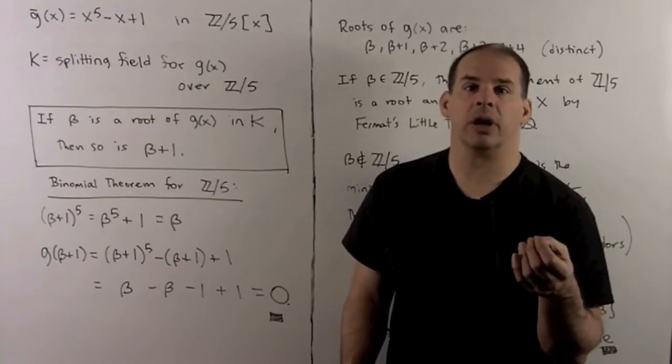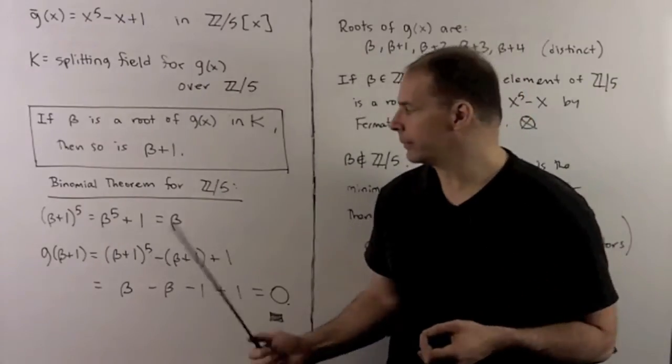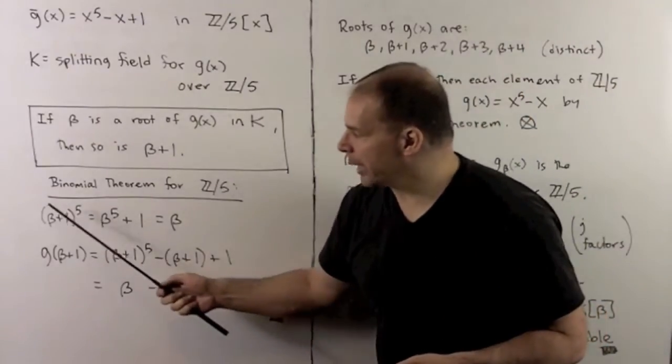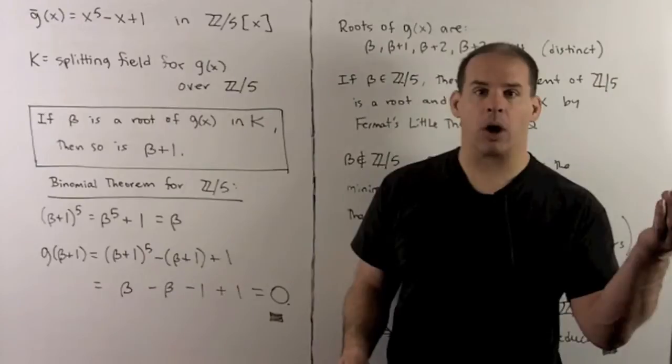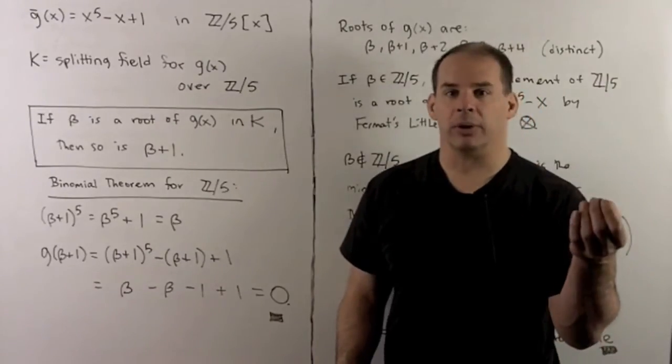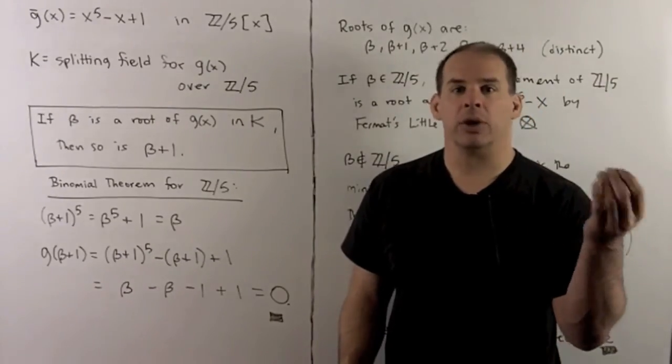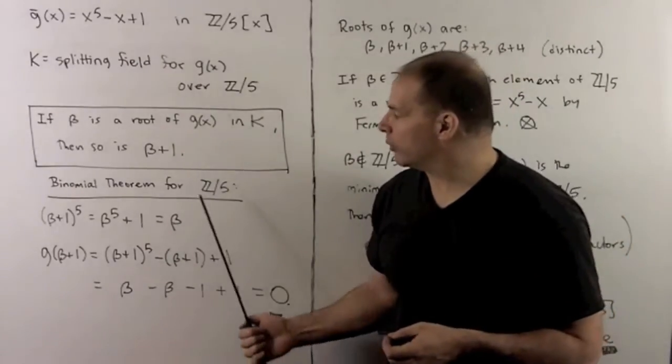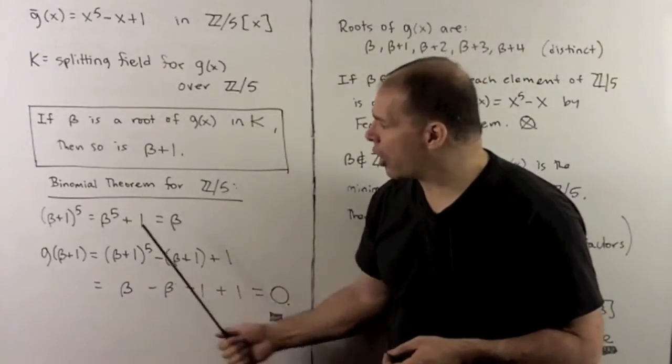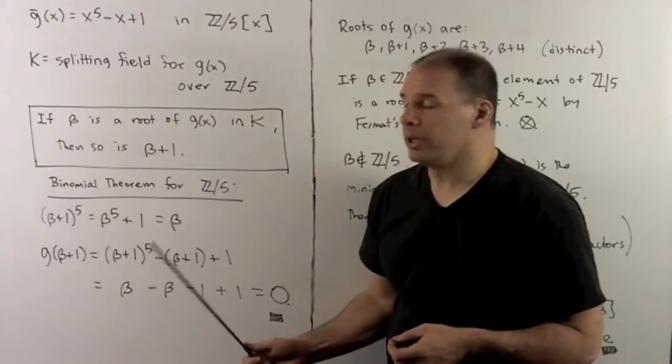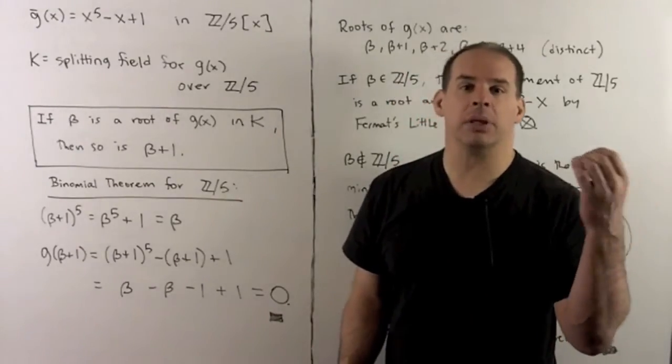To see this, we use the binomial theorem in Z mod five. Now, if I take beta plus one to the fifth power, we apply the binomial theorem over the integers. Then we know, because five is a prime, when we reduce modulo five, all the middle terms are going to drop out. So I'm left with beta to the five plus one.